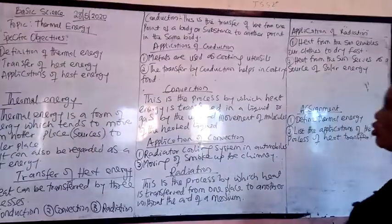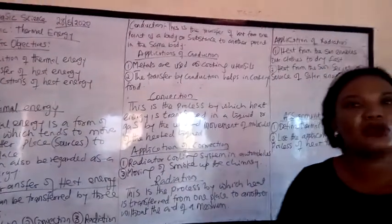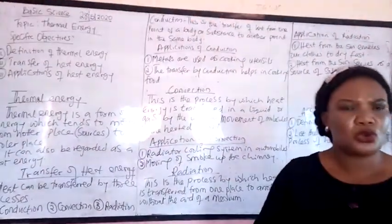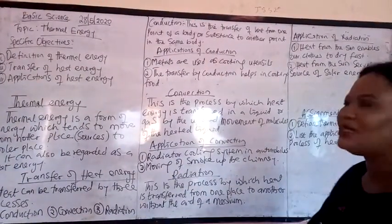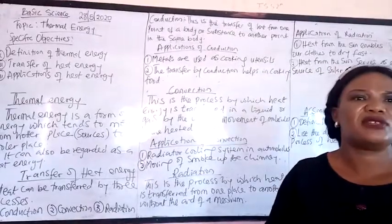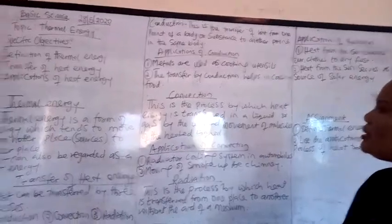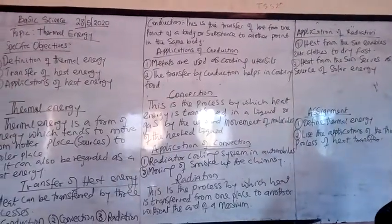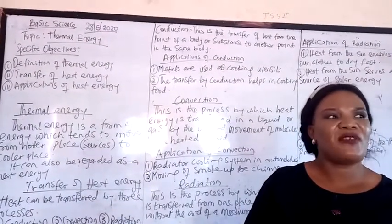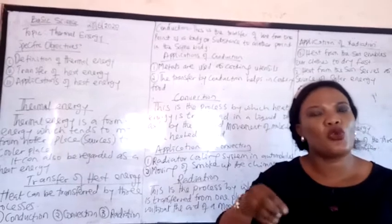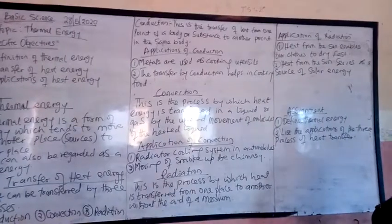What are the applications of conduction? Metals are used as cooking utensils. You cannot use non-metals to cook — you cannot use rubber to cook. You only use metals because they are good conductors. Heat transfer by conduction helps in cooking; that is why you put your food in a pot and the heat transfers from the stove to the pot.